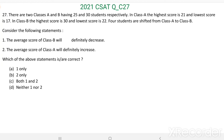Question number 27. There are two classes A and B having 25 and 30 students respectively. In class A, the highest score is 21 and lowest score is 17. In class B, the highest score is 30 and lowest score is 22.